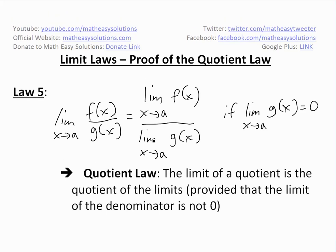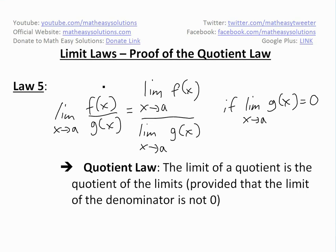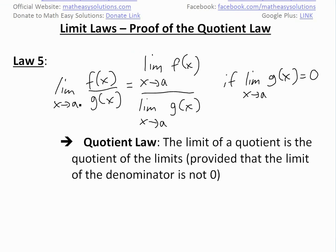Welcome to another Math Easy Solution. We're going to discuss further into limit laws and look at the proof of the quotient law. This is law 5 of the limit laws overview video, linked below in the description. This limit law states that the limit as x approaches a of f(x) divided by g(x) equals the limit of f(x) divided by the limit of g(x), provided the limit of g(x) as x approaches a is not equal to zero. In other words, the limit of a quotient is the quotient of the limits, provided the limit of the denominator is not zero.